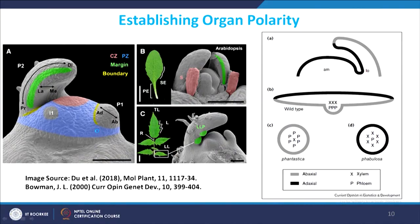Apart from organ specification and identity, another important feature established early is organ polarity. Any lateral organ — whether a flower organ (sepal, petal, stamen, carpel) or a leaf — displays a kind of polarity. In a leaf, the basal side is very different from the apical side, which is called proximal and distal polarity. Also, the portion of the leaf towards the meristem is adaxial, and the portion away from the meristem is abaxial. This clear organ polarity also needs to be established at the time of organogenesis.